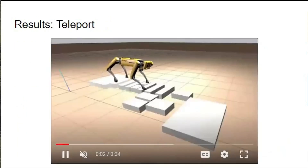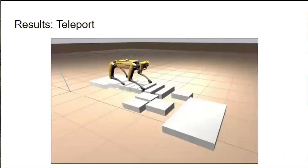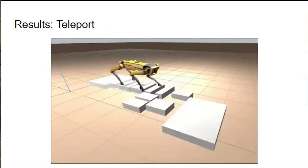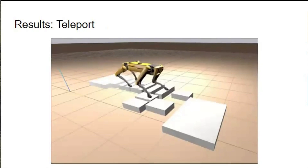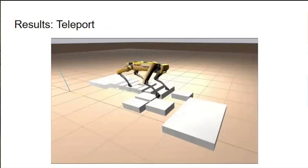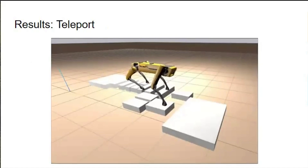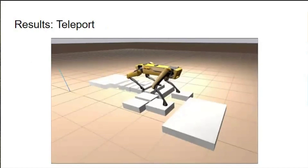Let's look at the results of the whole-body controller. Here we are not simulating physics, but just force-publishing the trajectory optimization. One interesting thing you can notice is that between each footstep, Spot slightly teleports, due to the fact that the start and end configurations are not hard constraints. Otherwise, the solution seems to be quite reasonable.